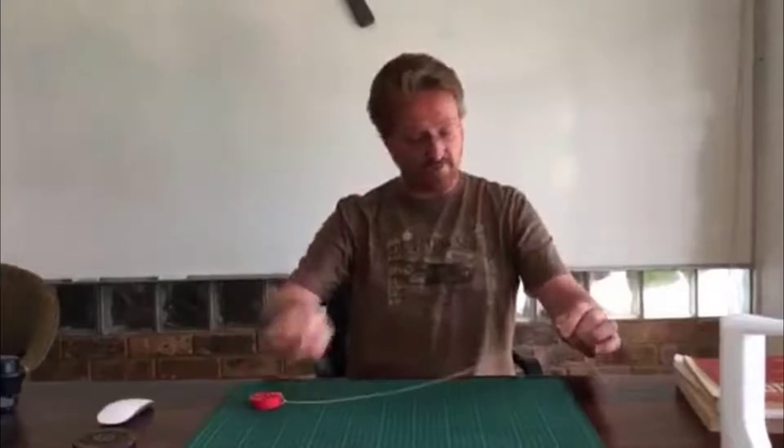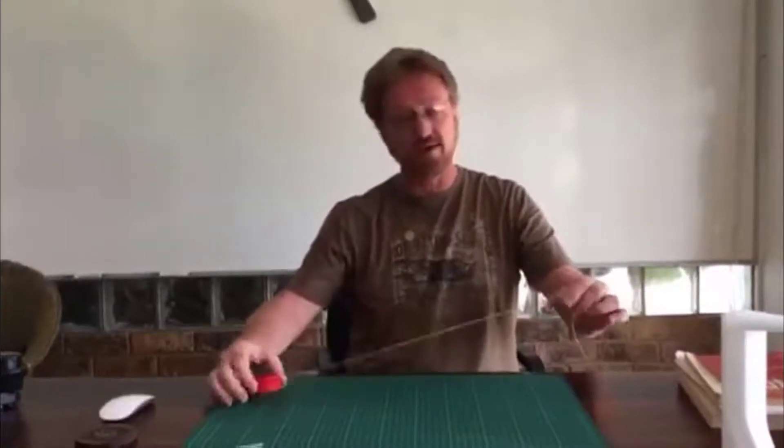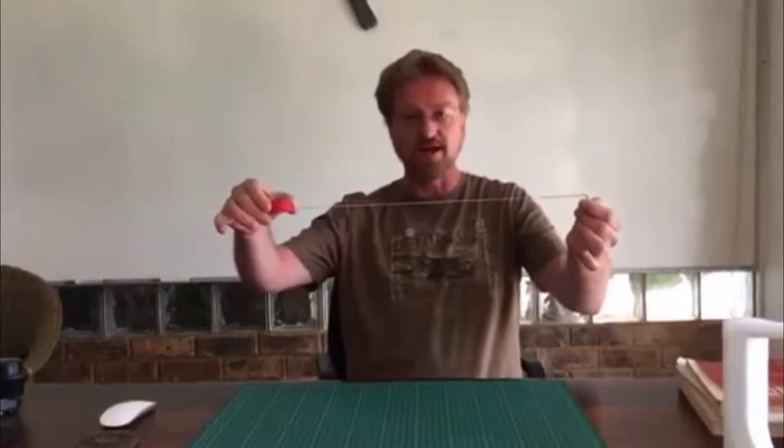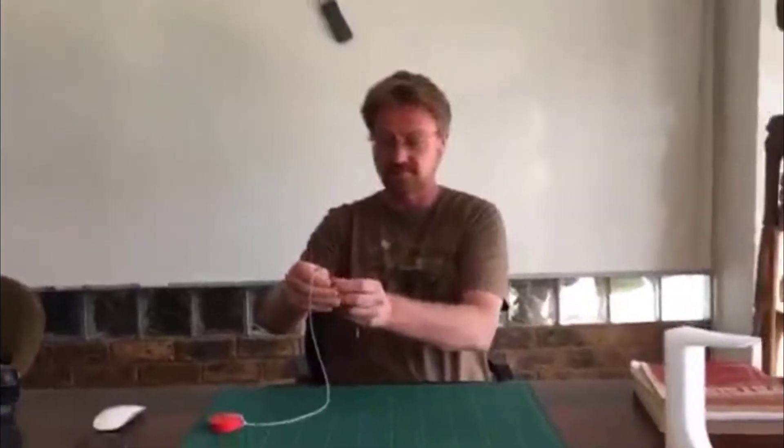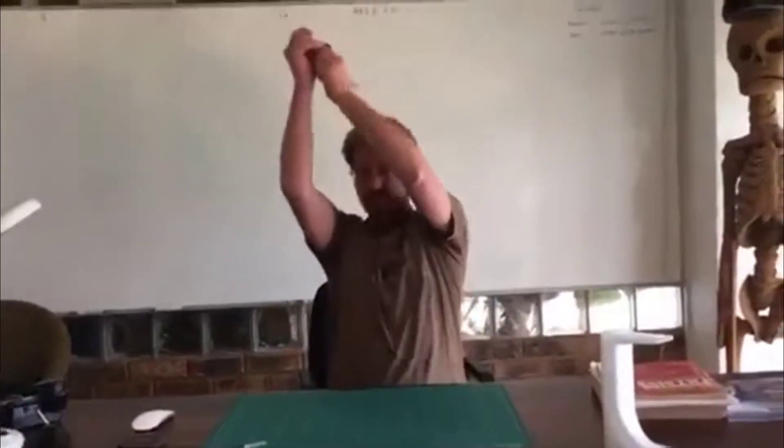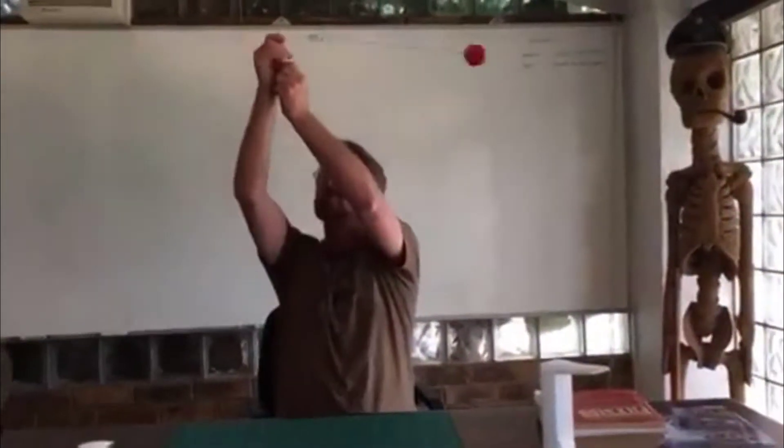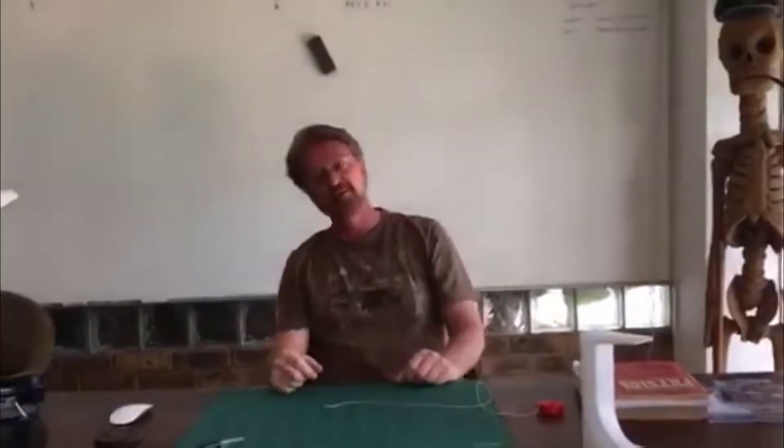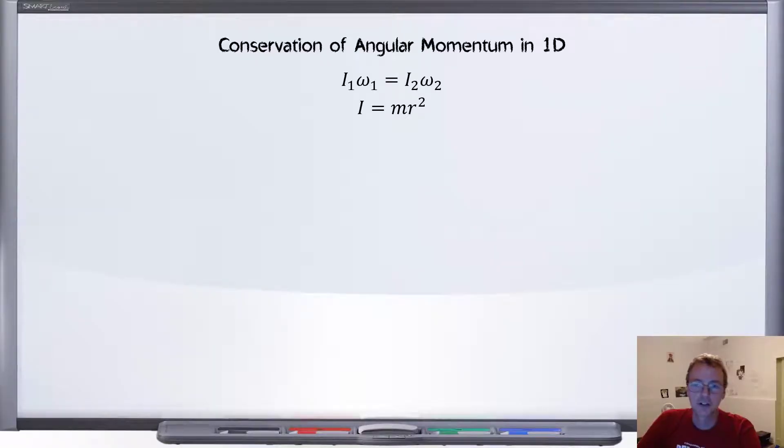And I reduce the radius from this point here to this point here, which is one tenth, then I should achieve 12,000 rpm. That's what science predicts. Let's try it. So he starts the spinning and he will reduce the radius. And I think we can see it didn't go as fast as predicted.